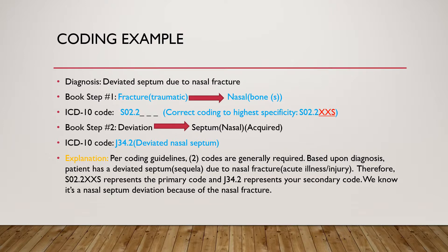Therefore, S02.2XXS represents the primary code, and J34.2 represents the secondary code. We know it's a nasal septum deviation because the patient had a nasal fracture. Depending on where you work, because the S-code represents an injury or sequela, it is appropriate to add additional codes such as the external cause codes — what caused the nasal fracture, what activity the patient was performing, the place of occurrence, and whether this occurred during a school activity, work activity, or is unspecified. If you coded the external cause codes, you would still be correct, but for this segment we're focusing on the actual sequela codes.